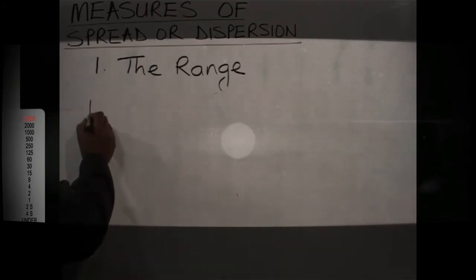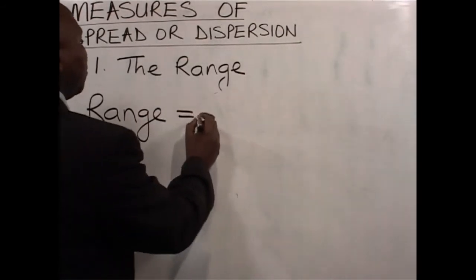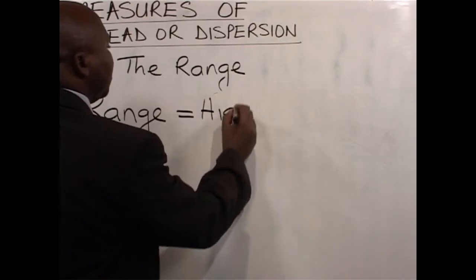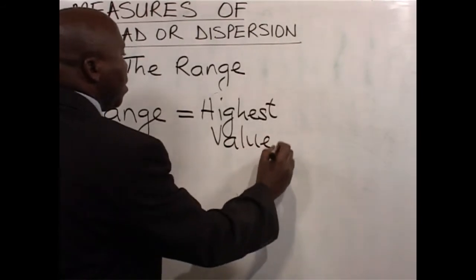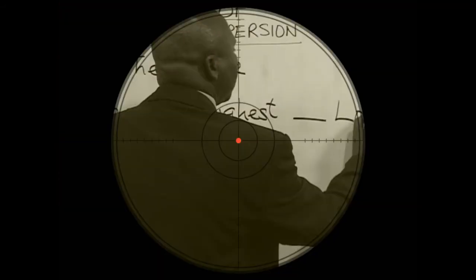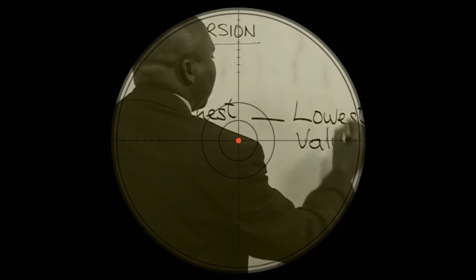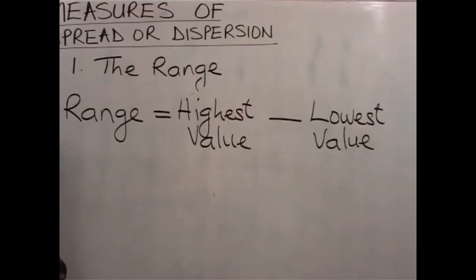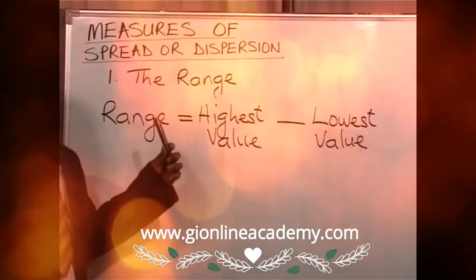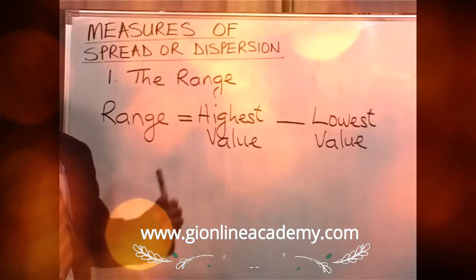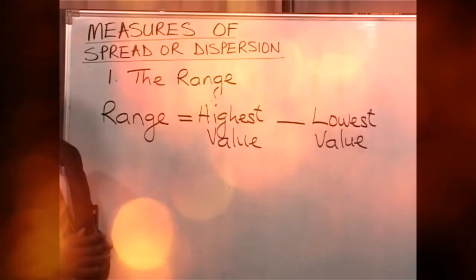We define the range as follows: range is equal to highest value minus the lowest value. Whenever you have a set of values, the first thing to do is to arrange them in order of size, starting with the lowest to the highest. When you take the difference between the highest and the lowest, that value you get will be the range.